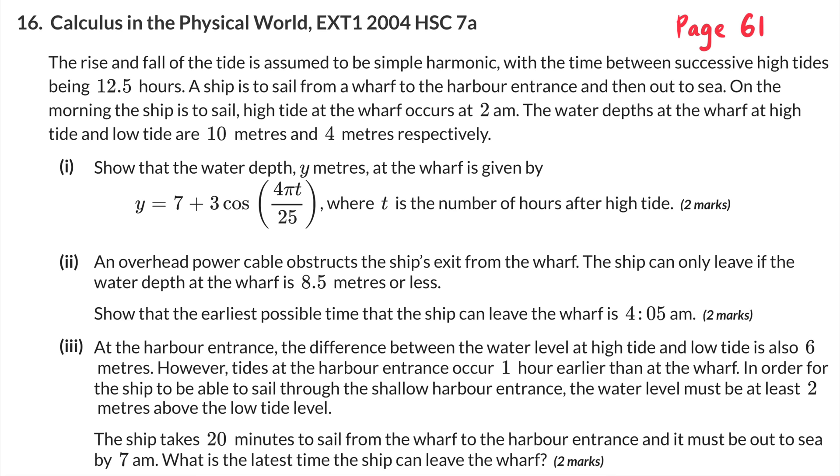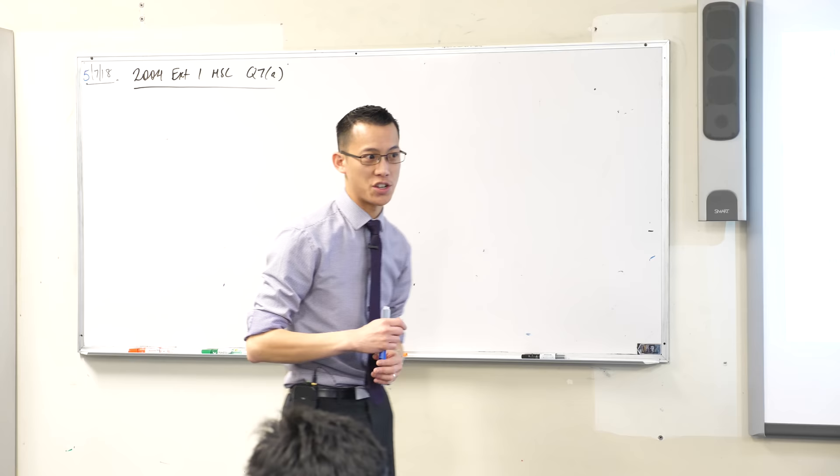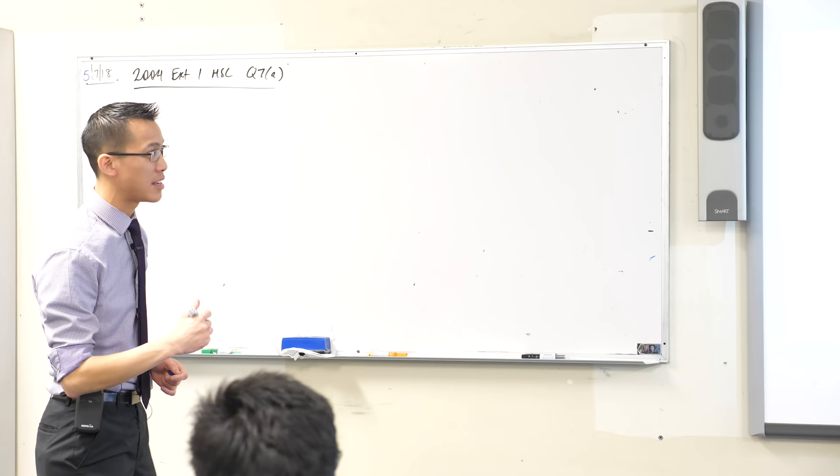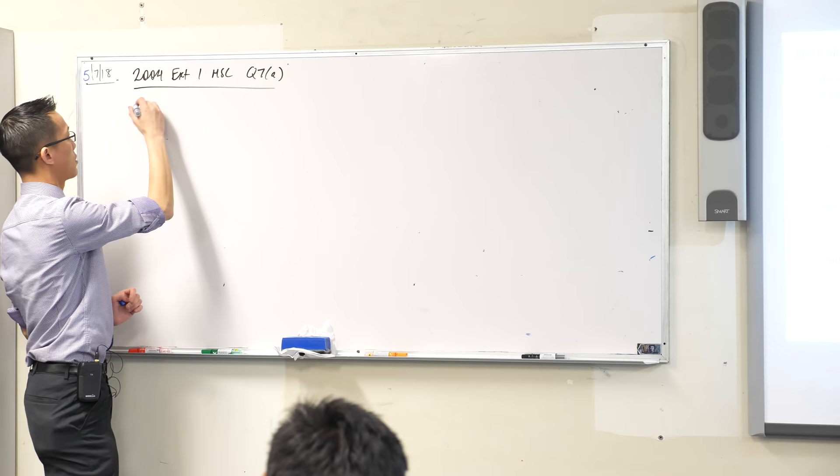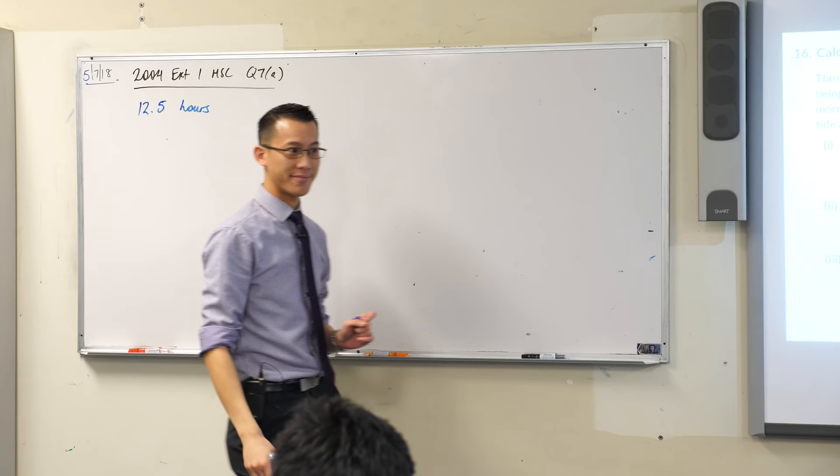Let's try and work out first what do you think are the important facts that you see in this introductory paragraph. What do you think is the first piece of information that's vital? 12.5 hours is the first number - I should write that down, that matters. Okay, 12.5 hours. What is the significance of this piece of information? It's the time between successive high tides.